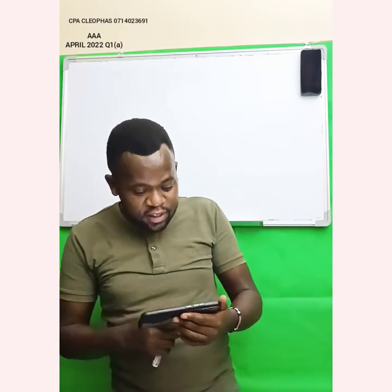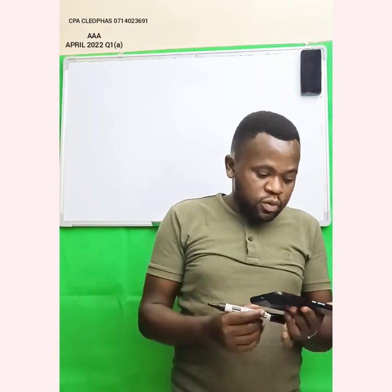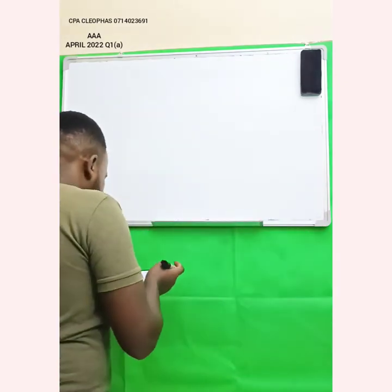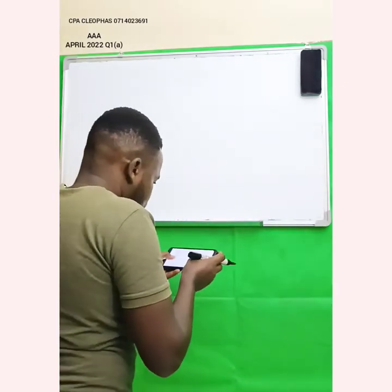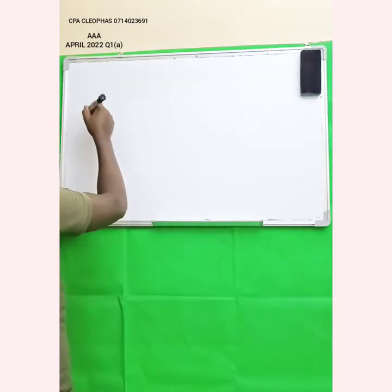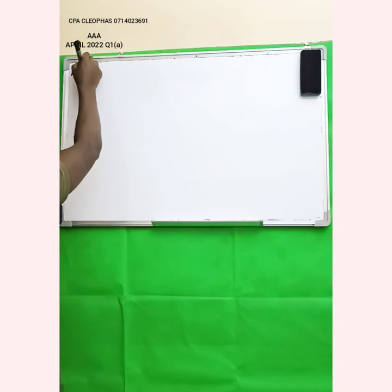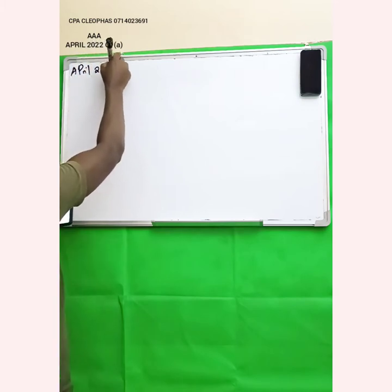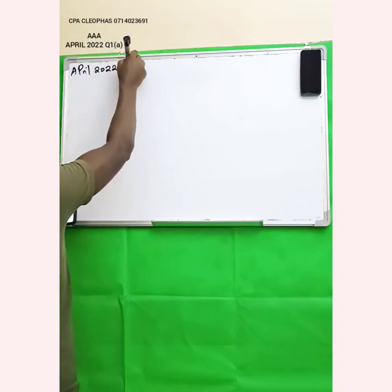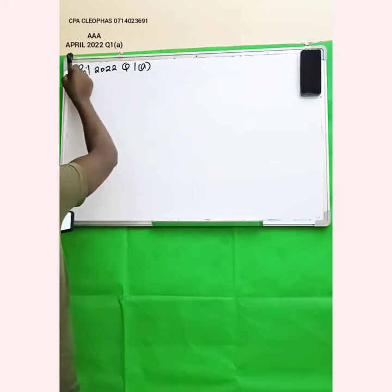This is the latest sitting, April 2022, Advanced Auditing and Assurance. I am reading it from here, my phone — I have a soft copy of the paper. This is April 2022, question number 1A, which is 12 marks.